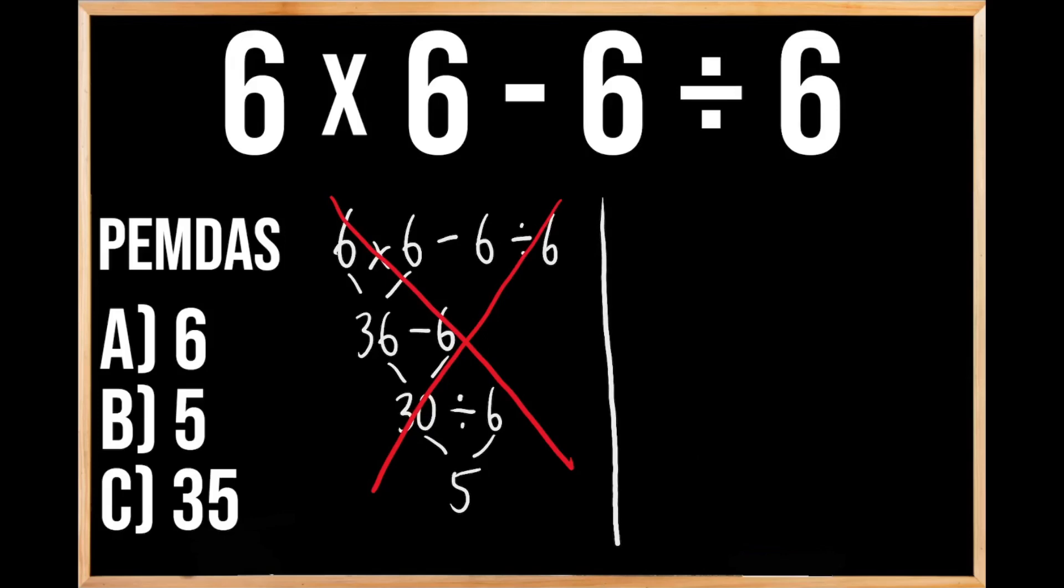The problem once again was 6 times 6 minus 6 divided by 6. So since we have multiple operations within this problem, we need to make sure that we're following the order of operations. And over on the left-hand side, we can see the acronym PEMDAS, which stands for the order of priorities when solving problems just like this. The P in PEMDAS stands for parentheses, and the E stands for exponents, and since we don't have either one of those, we're going to move on to our next priority of multiplication or division.